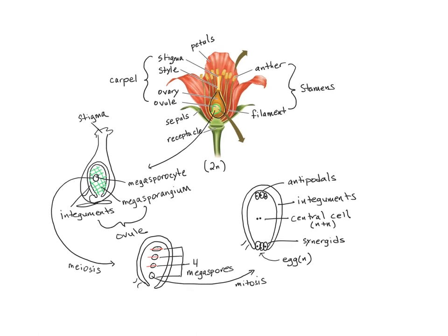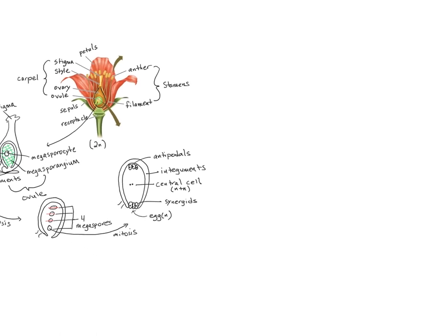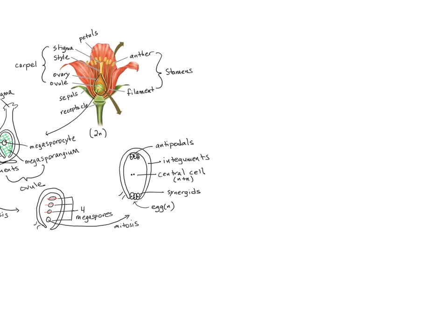If I zoom out here and focus on the male side, what I'm going to see is if I take a look at just one anther. Just like on the female side, there is a microsporangium inside of which there are many cells that we call microsporocytes.